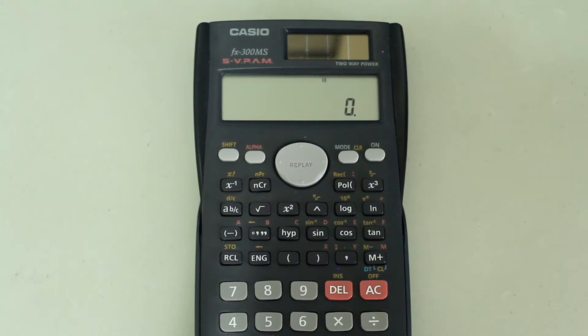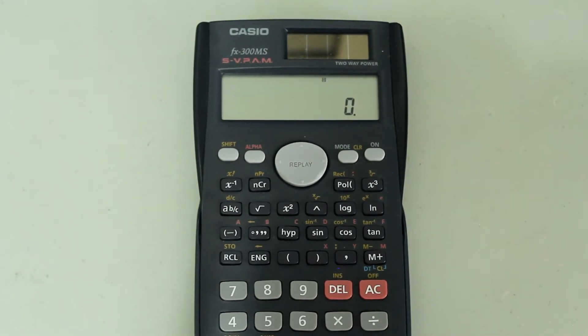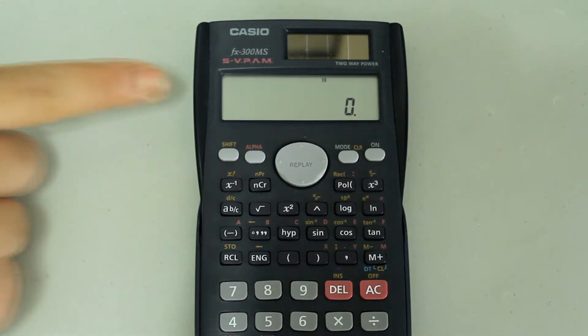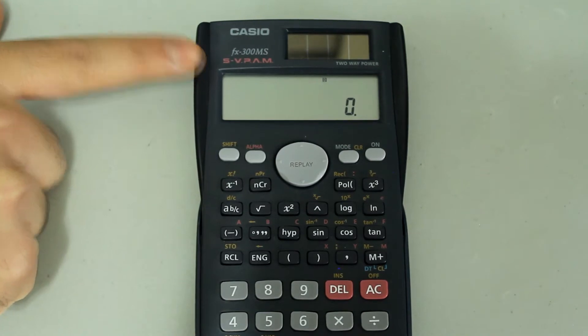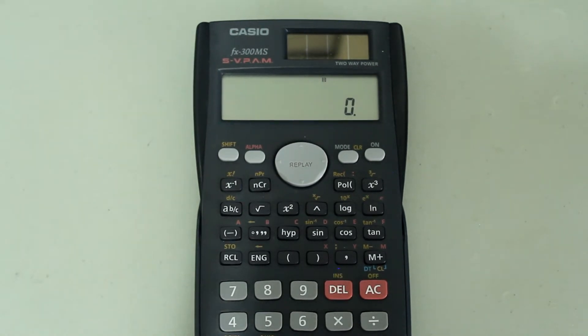Hey guys, this is a video in my Casio scientific calculator tutorial series. In this video, I'm going to demonstrate how to generate random numbers using your Casio scientific calculator. The model I have here is a Casio FX300MS. The steps, however, should be applicable to similar model calculators.